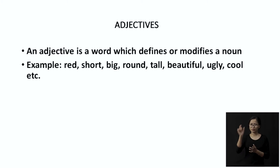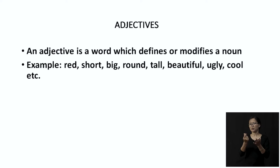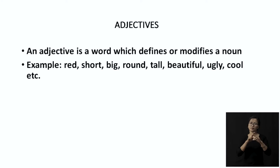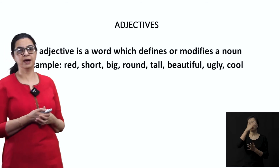So all of these are always described using adjectives. If I say that Preeti my friend is beautiful — Preeti is a name, that is a noun, and how have I defined her? Pretty or beautiful — so that is your adjective. Modifies means another way to see how we can describe the noun. For example: red, short, big, round, tall, beautiful, ugly, cool — all of these are known as adjectives.